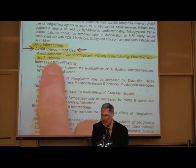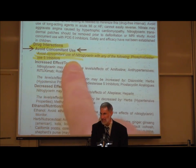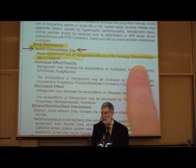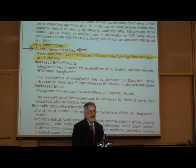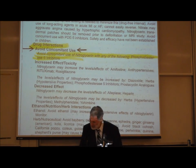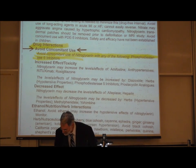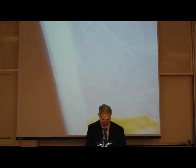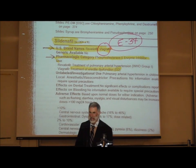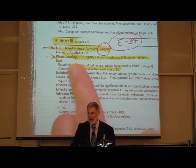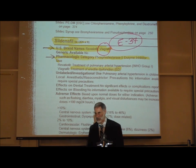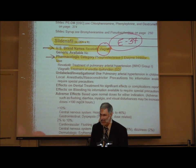In drug interactions, it says avoid concomitant use of nitroglycerin with any phosphodiesterase-5 inhibitors, which are like the Viagra type of drugs. On page E37, for sildenafil — that's Viagra — the pharmacologic category is a phosphodiesterase-5 enzyme inhibitor, and its use is treatment of erectile dysfunction.